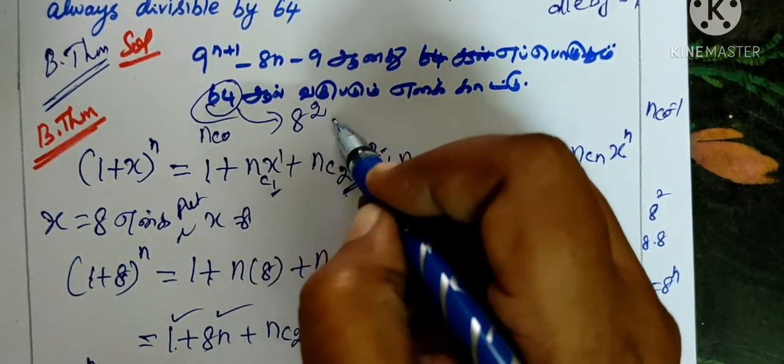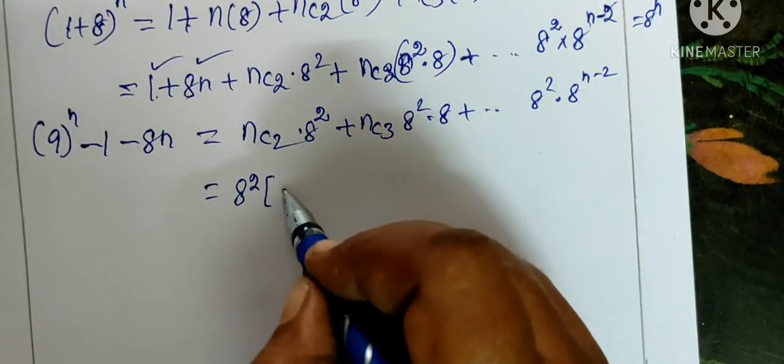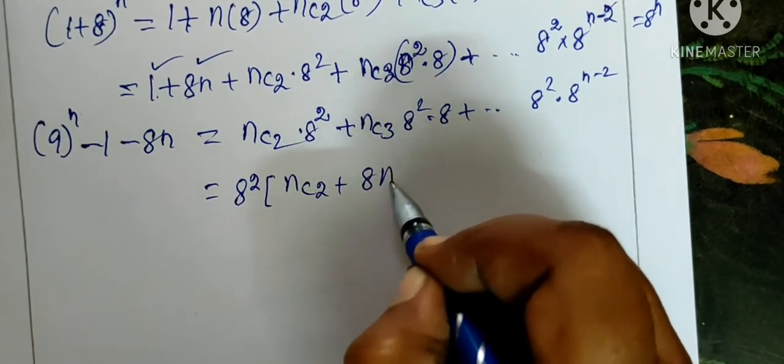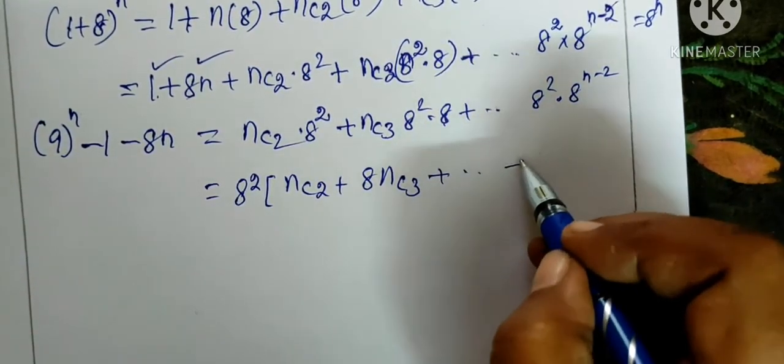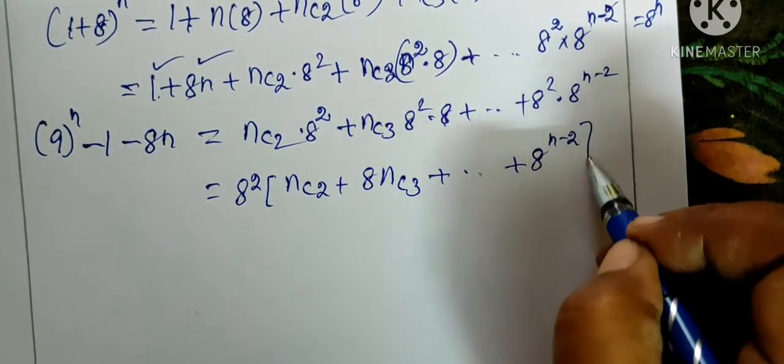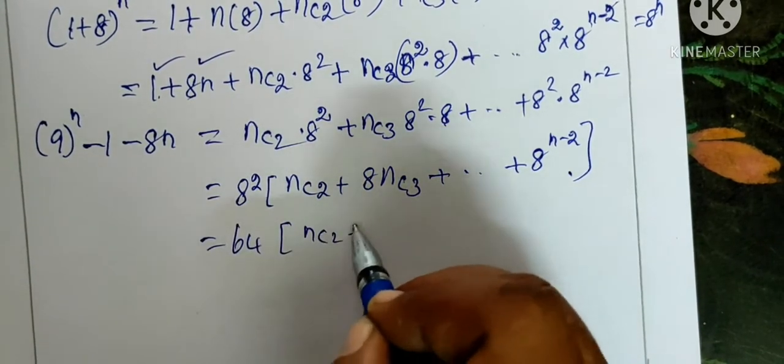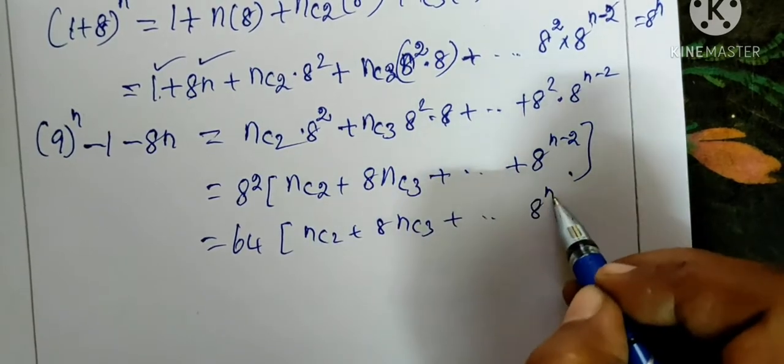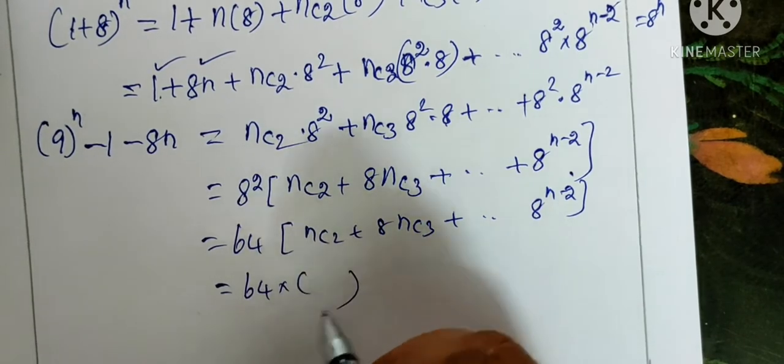8 squared will be 64. After 64, we call it 8 squared. Therefore, now we have 64 in the bracket. nc2 plus 8 times nc3 plus etc. plus 8 power n minus 2.